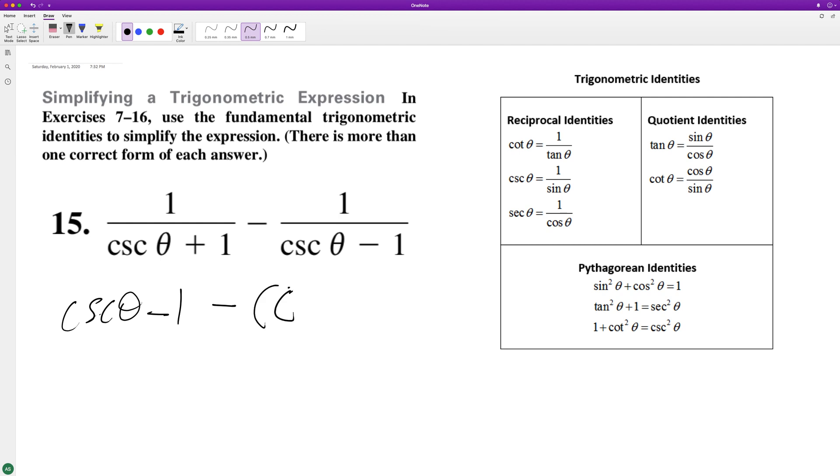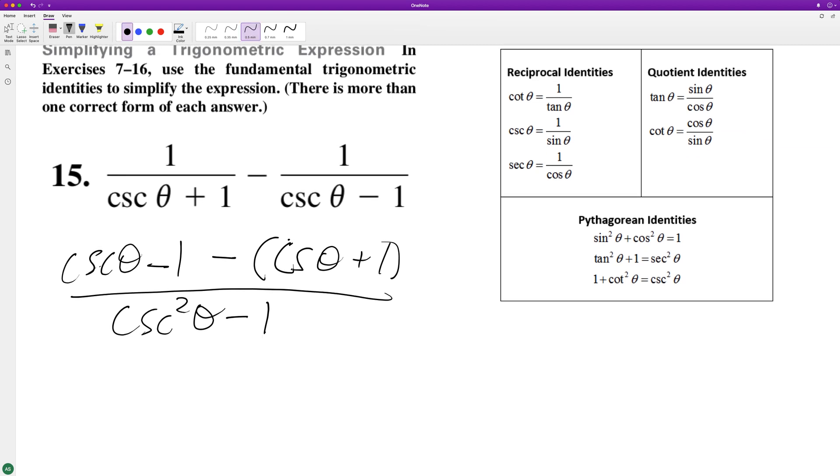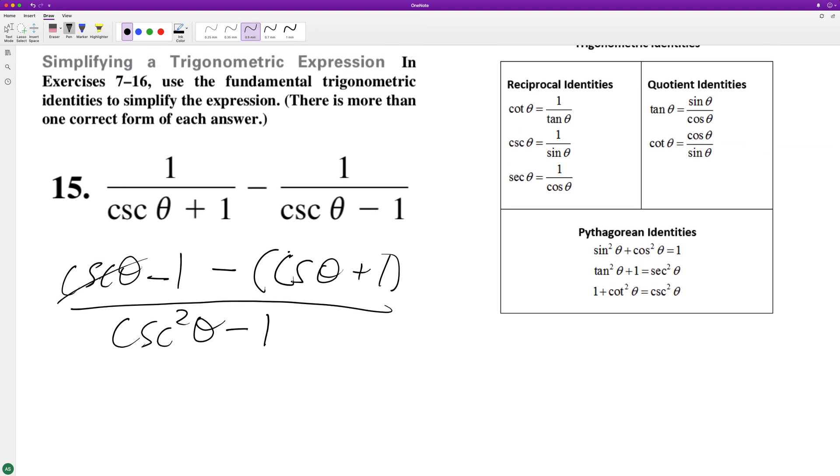Minus cosecant theta plus one, because that's what we had to do to get the denominator. So this ends up being cosecant squared theta minus one, a difference of perfect squares. Then distribute, and the cosecants cancel.